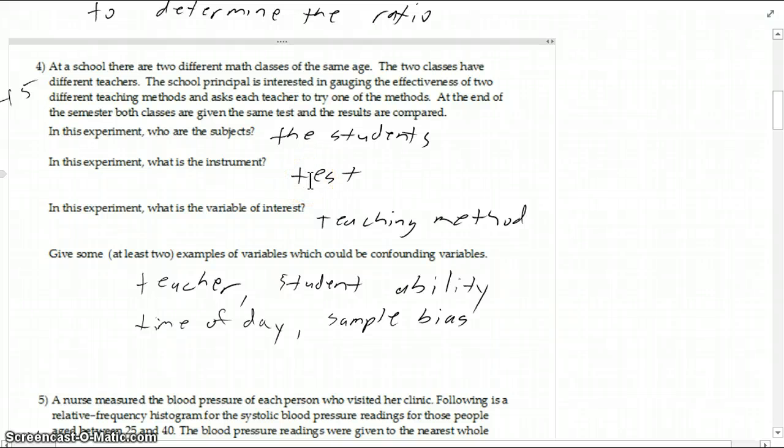The instrument is the test. That's how we're measuring to see the effect here. And then what we're actually trying to, what variable is, is which method is superior, the teaching method. And then there's a ton of lurking variables here, like the teacher, the ability of students, maybe even the bias on how the students got put into those sections, what's their motivation level. There's just a ton of different things that could confound the results here.